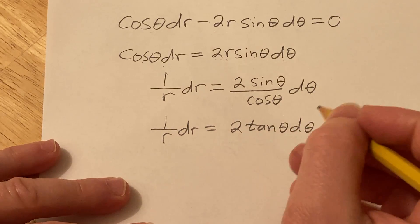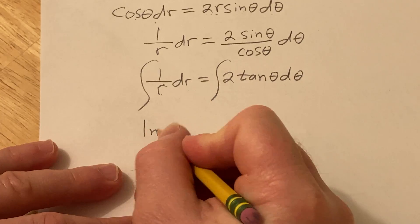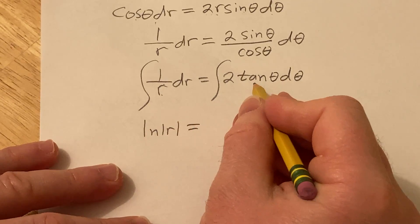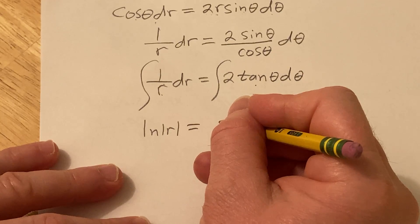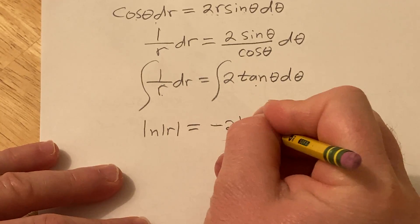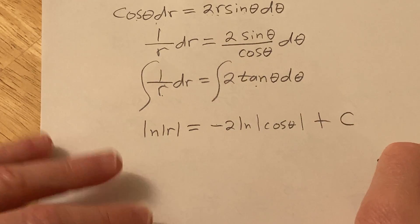Now we integrate. 1 over r gives you ln absolute value of r. Tan theta integrates to negative ln absolute value cosine, so this becomes negative 2 ln absolute value cosine theta plus our constant of integration C.